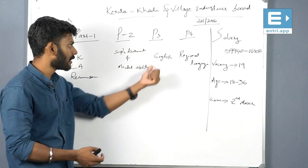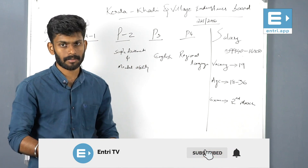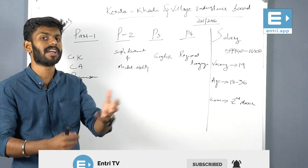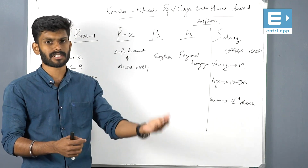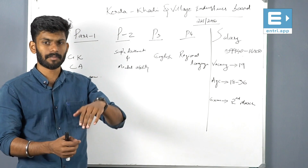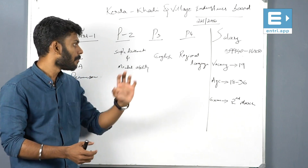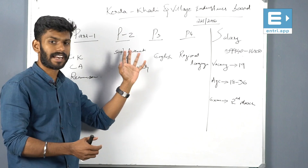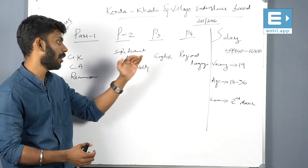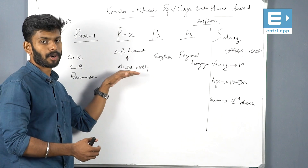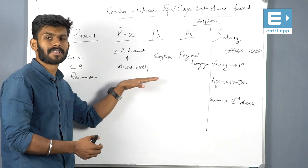Part 2 is simple arithmetic and mental ability. This covers basic mathematics including compound interest, simple interest, problems on ages, and problems on clocks. It also includes basic arithmetic operations, mental ability, reasoning, and number series.